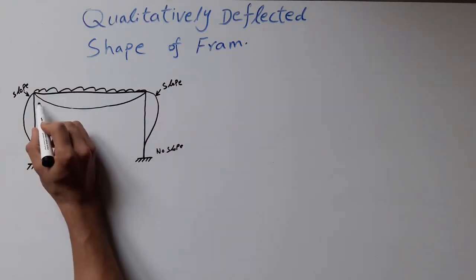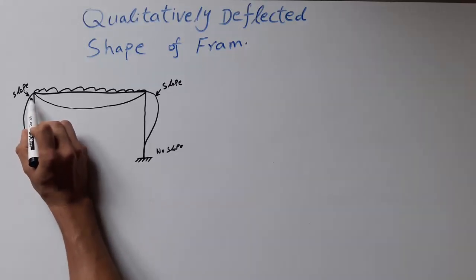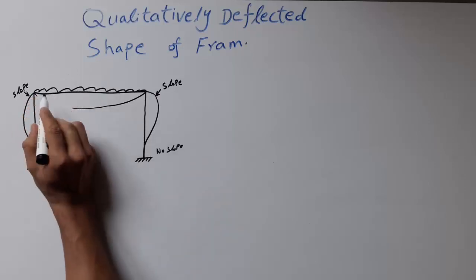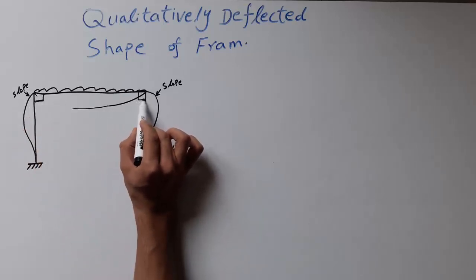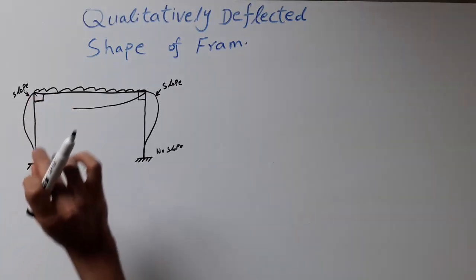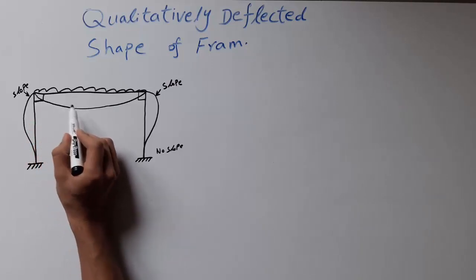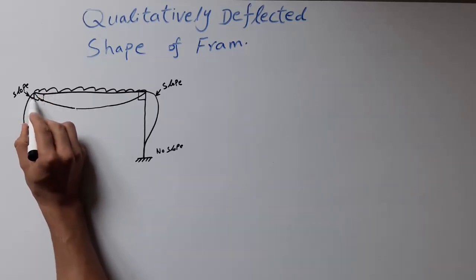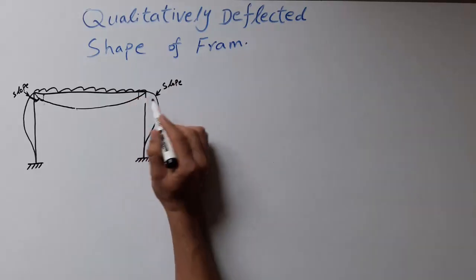For this beam we have slope on both ends. The key idea is that the beam and the column should always maintain a 90-degree angle. Before deflection we have 90 degrees here and here. Once the load acts on the beam and the beam deflects, the shape changes but the 90-degree angle is maintained — it has simply moved. Similarly on the other end.